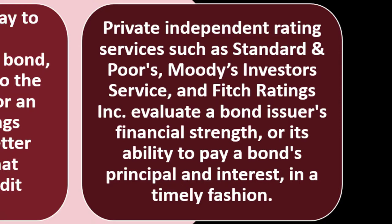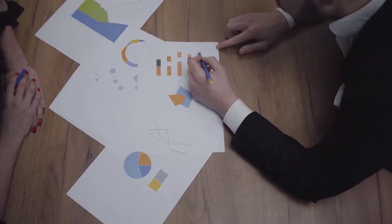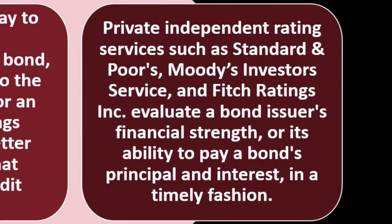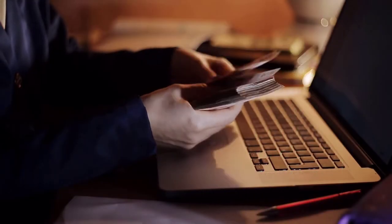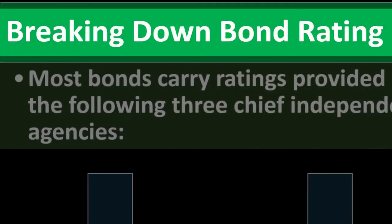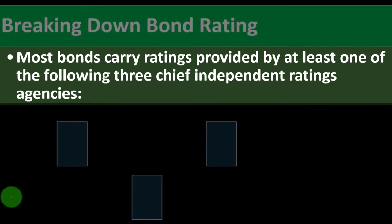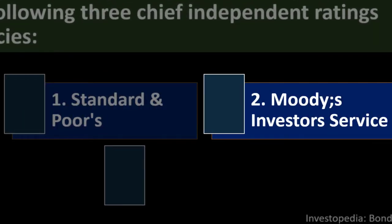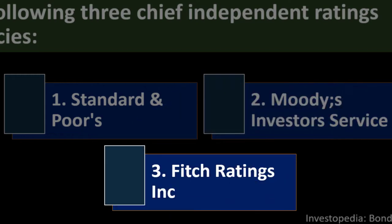These agencies evaluate a bond issuer's ability to pay a bond's principal and interest in a timely fashion. When rating a bond, you're looking at the issuer — the one that has to pay the interest payments and principal at the end — and assessing whether they have the cash flow to do so. What's the likelihood they won't default? Most bonds carry a rating provided by at least one of the three chief independent rating agencies: Standard and Poor's, Moody's Investor Services, and Fitch Ratings Incorporated.